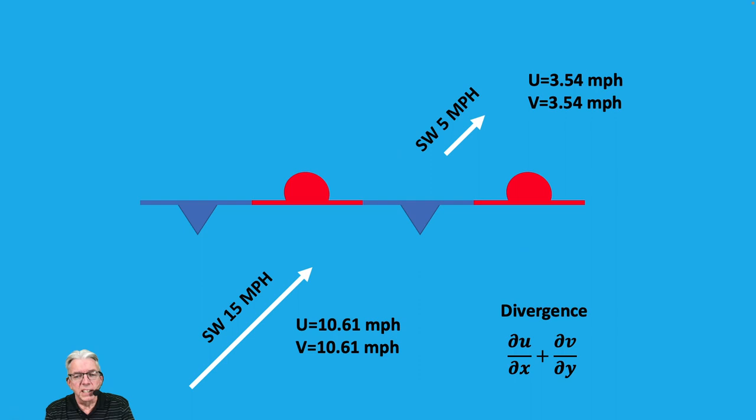So let's take a look at our divergence equation again. What's happening to U as we go in the X direction? U is going from 10.61 to 3.54, so it's going down. It's a negative change. V is going from 10.61 to 3.54. It's also going down. It's a negative change.